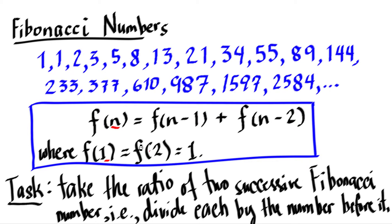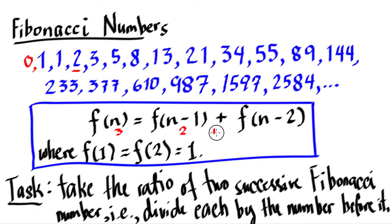Even though there are some who want to define the Fibonacci number starting with 0 — so 0 plus 1 is 1 — but let's have this definition as it is. So for instance, if you want to get the third Fibonacci number, what you do is have n minus 1. To get F of 3, you need to have the second number plus the first number. The second number is 1, the first number is 1, so you add 1 plus 1, which is 2.